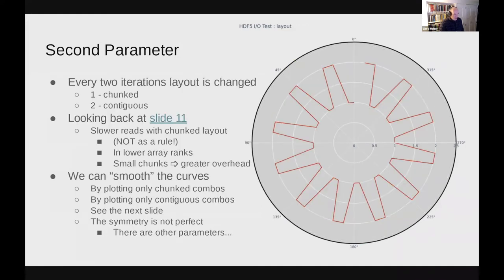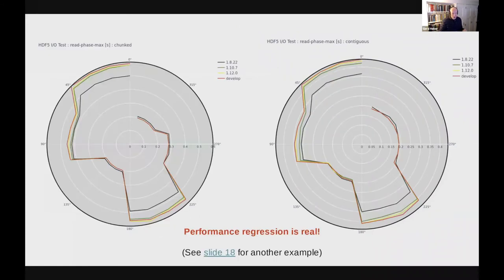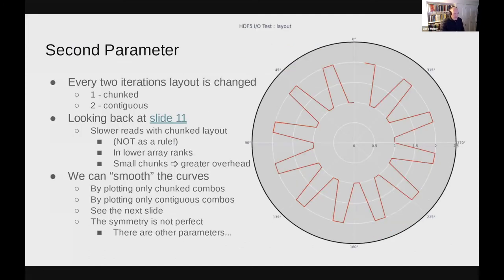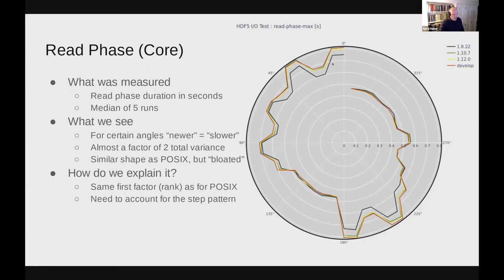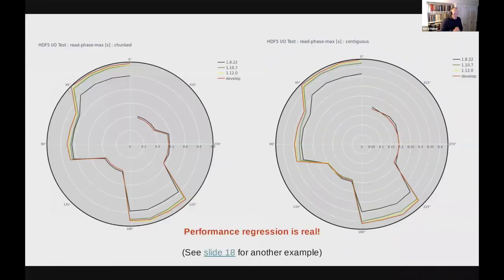To prove that assertion — that the change in layout causes the tooth pattern — if we restrict ourselves to just one layout, plotting only contiguous runs or only chunked runs while varying all other parameters, these curves should smooth out. And indeed that's what happens. On the left, with only chunked layout (all other parameters varying), and on the right with only contiguous layout — all the teeth are gone. That has some explanatory power.